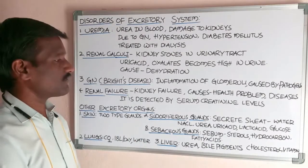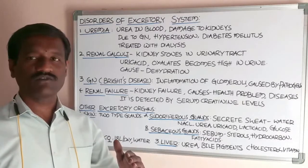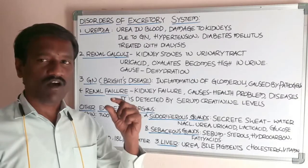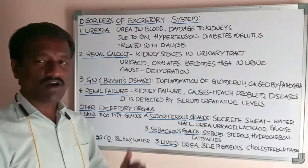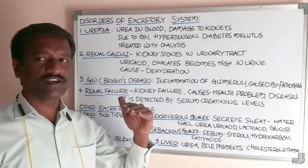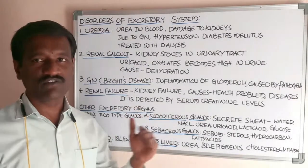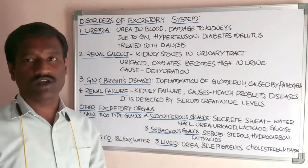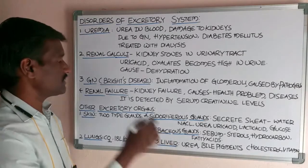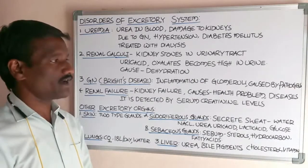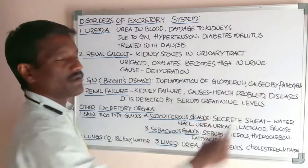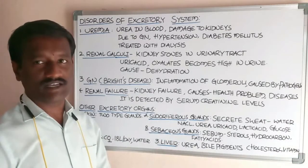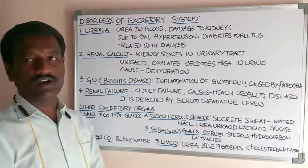Glomerulonephritis means inflammation of the glomerulus. The glomerulus is the part of the Malpighian corpuscle in the nephron. The upper end renal arteriole enters into the Bowman's capsule and forms a network of blood capillaries called the glomerulus. Glomerulonephritis is a disorder caused by pathogens — bacteria, viruses, fungi, and parasites.